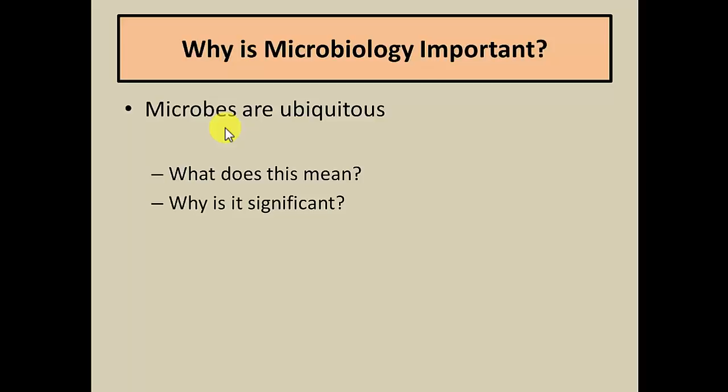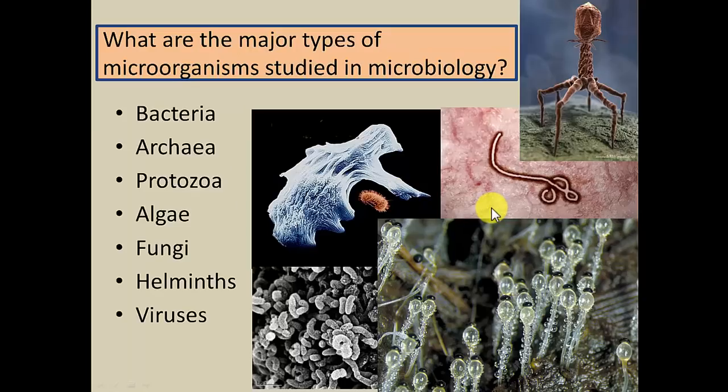For example, why one person might get an influenza respiratory infection and possibly die from it, whereas someone else could fight it off within a couple of days and be fine. These are some of the ideas that relate to ubiquity as well as why microbiology is thought to be important.